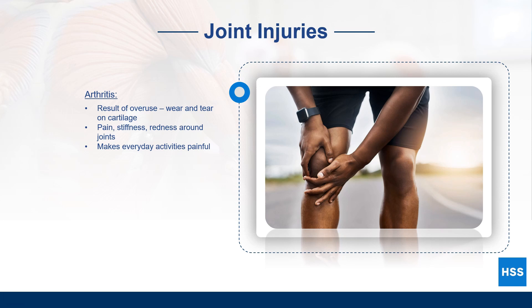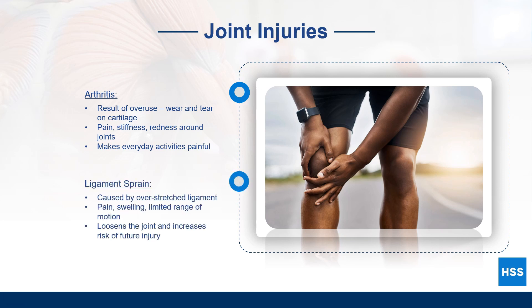Arthritis can affect any joint and makes exercise and everyday activities painful. Another type of joint injury, known as a ligament sprain, is the result of an overstretched ligament. This type of injury is typically caused by dysfunctional movement or movement outside a joint's normal range of motion. The signs and symptoms include pain, swelling, and limited range of motion.